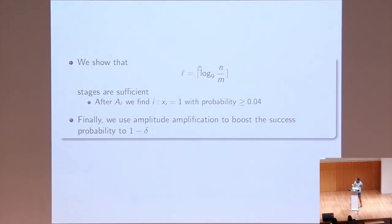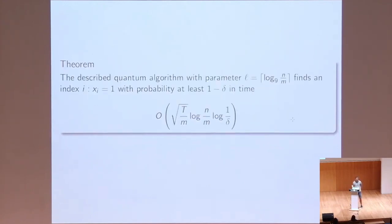And this recursive tripling succeeds in logarithmic number of stages. So after this many stages, this amplitude at the solutions is amplified far enough, and we find one of the solutions with constant probability. And of course, then we can boost that probability to one minus delta with logarithmic number of rounds. So basically, this is how this simple procedure works, and that results in the logarithmic of the claimed complexity.